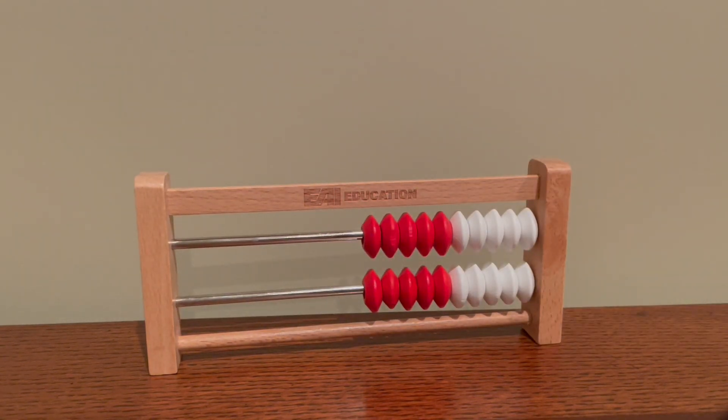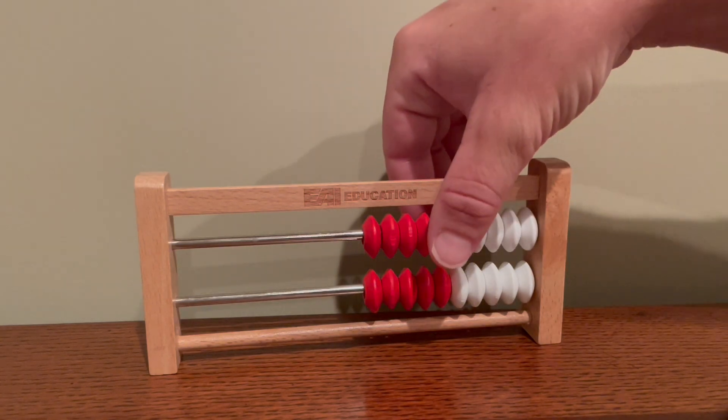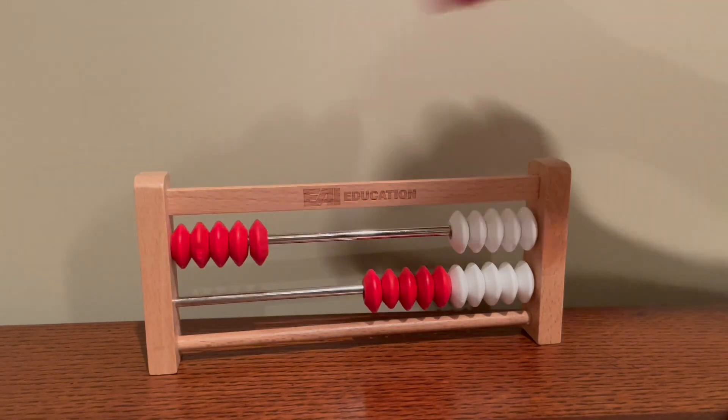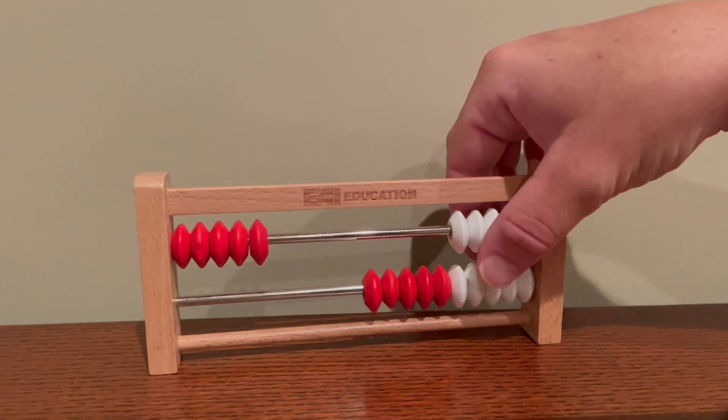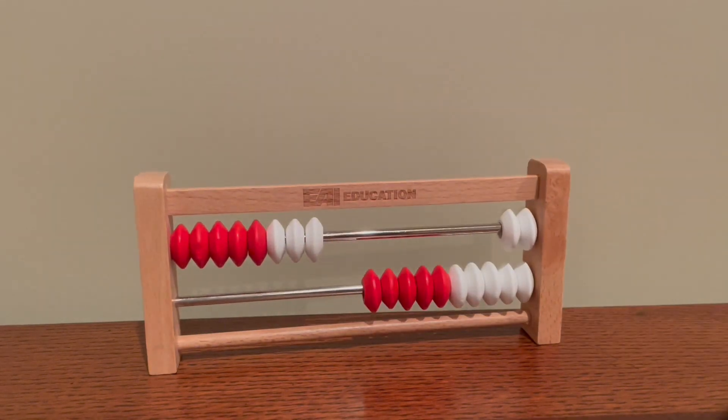If I wanted to show the number eight, I might know five and then I might think five and three more makes the number eight.